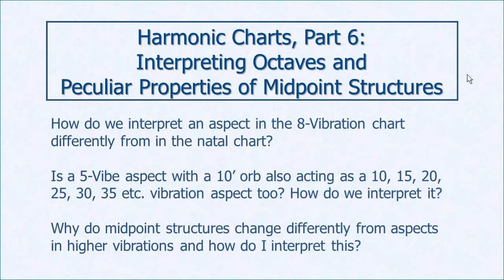Suppose you have a five vibration aspect in your natal chart — a 72-degree aspect, a one-fifth, or a 144-degree aspect, a two-fifths, also known as the quintile and bi-quintile — with only a ten-minute orb. Is that aspect also acting like a 10, 15, 20, 25, 30, or 35 vibration? And there are differences between how midpoint structures work going up octaves versus aspects. We're going to review and then get specific about things not explained clearly before, plus a few new points.